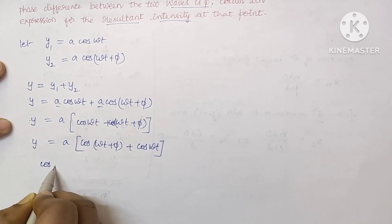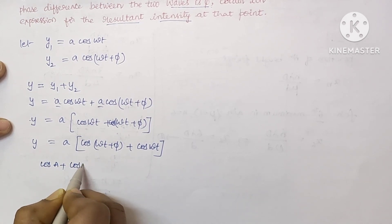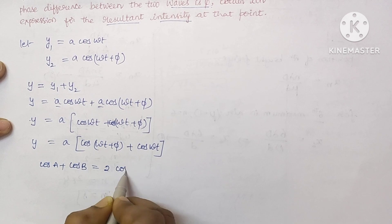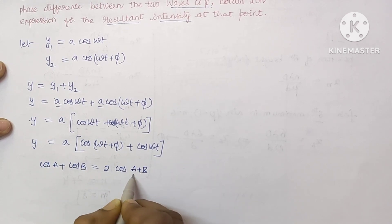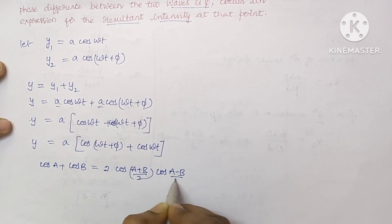This is in the form of cos A plus cos B, which is equal to formula 2 cos A plus B by 2 into cos A minus B by 2.